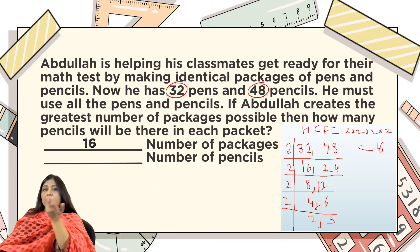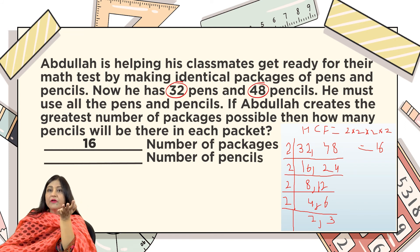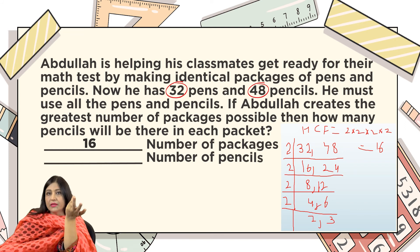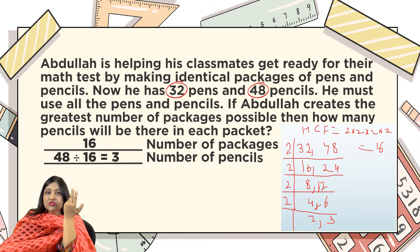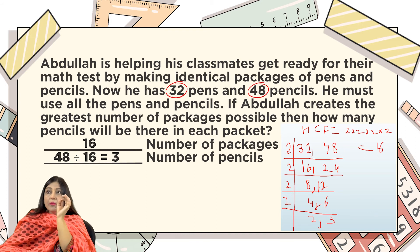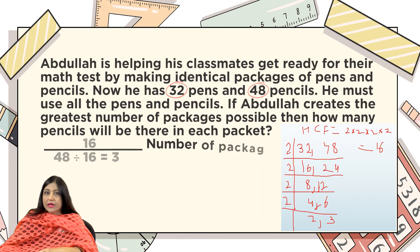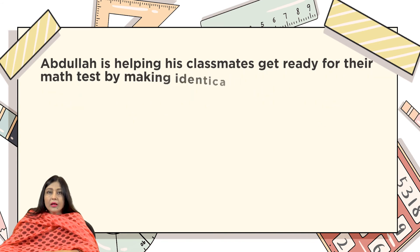Now how many pencils are in each packet? Since the HCF is found, it's easy: total pencils are 48, so divide 48 by 16 — that is the HCF — and you get 3. So the number of pencils in each packet is 3.